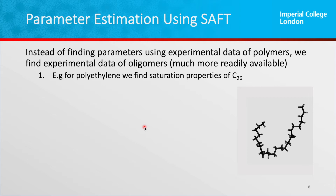In order to do this for polymers, instead of using experimental data of polymers directly, we actually take experimental data of other molecules that contain the monomer units. We use oligomers that are smaller than the polymers because we have much better quality experimental data. So we find molecules that contain the monomer units and fit these monomer unit parameters to those molecules.